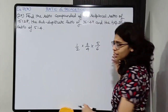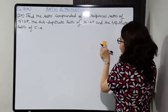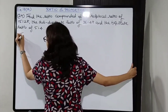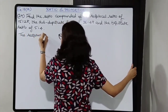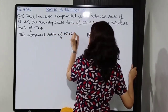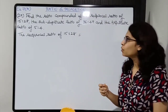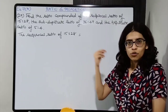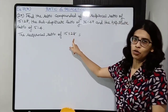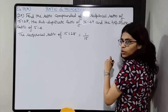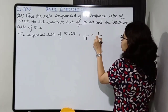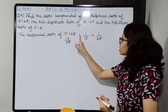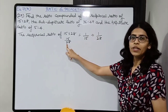Very easy, based on the sums we have solved so far. The first ratio is the reciprocal ratio of 15 is to 28. The reciprocal ratio means whatever the ratio is, you take the reciprocal of that. So it becomes 28 is to 15. Showing the working: reciprocal of 15 upon 28 gives 1 upon 15 divided by 1 upon 28, which is 28 upon 15.